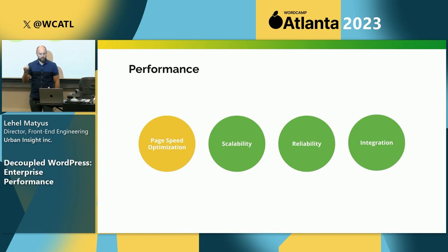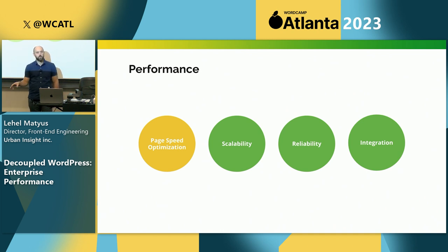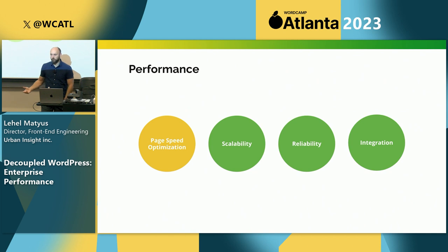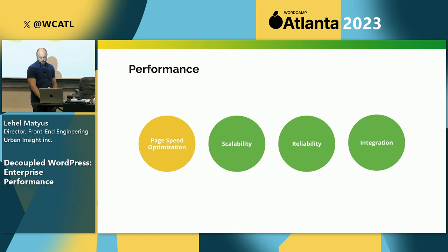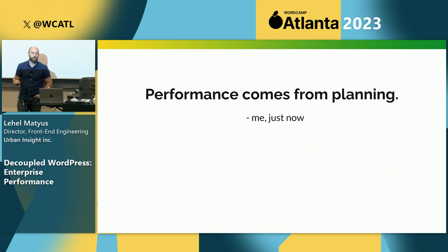We will focus on page speed optimization, but we also have to keep scalability, reliability, and integration in the back of our mind. As an agency, if you don't think about these, you're going to be pushing out websites that keep failing. So whatever solution or technologies you pick, always keep at least these four things in mind when it comes to decoupled performance.